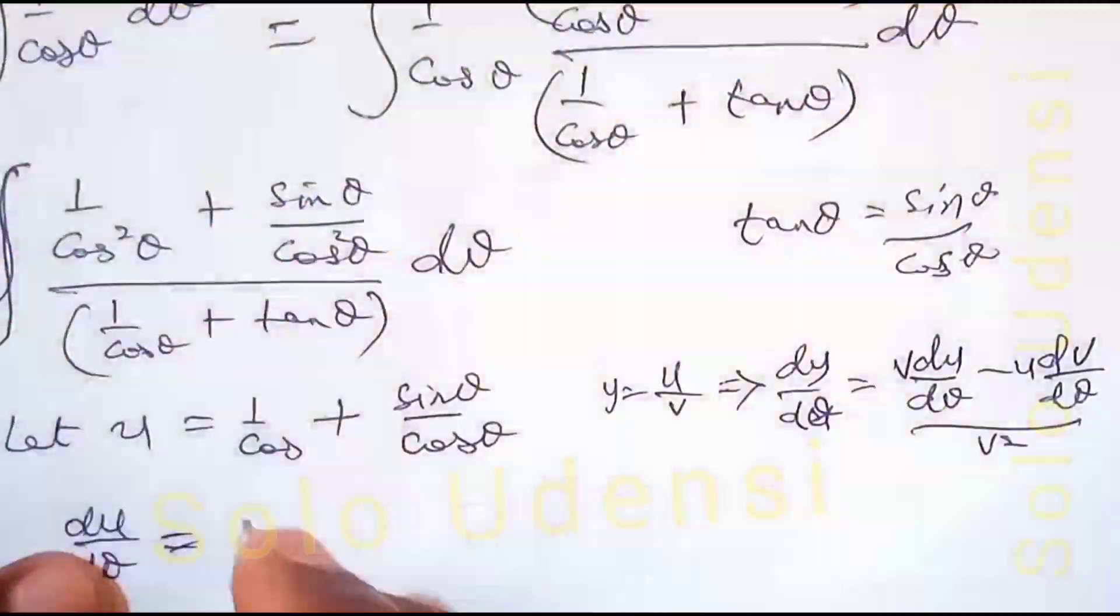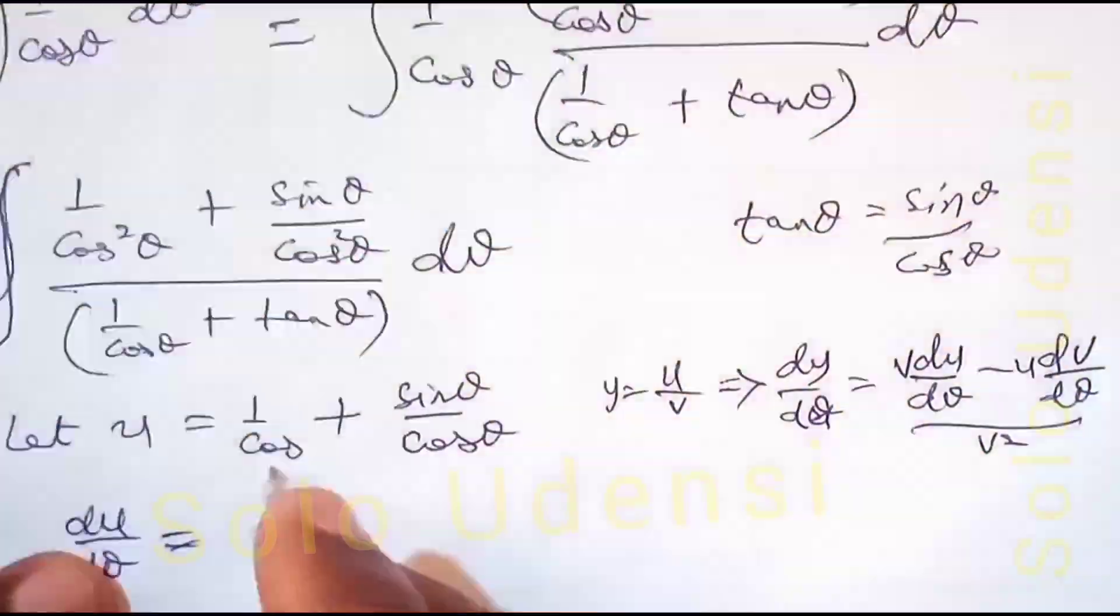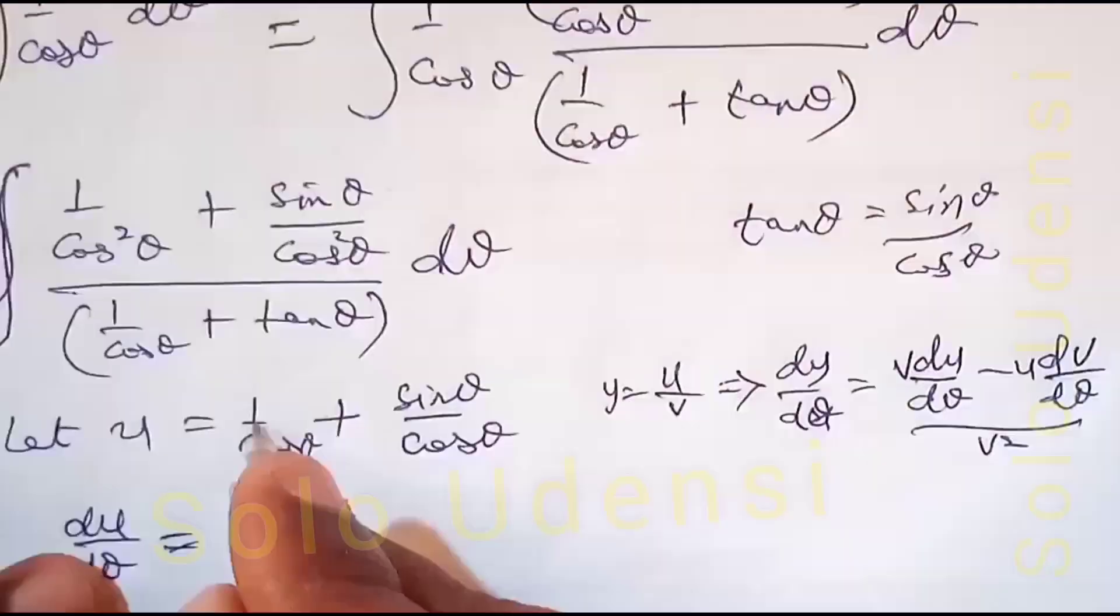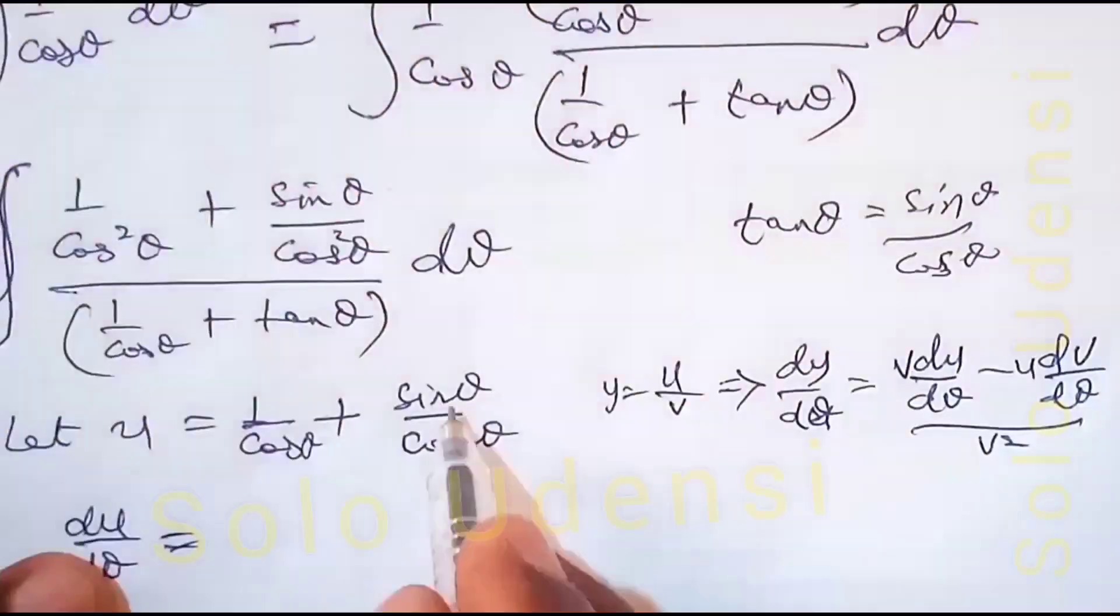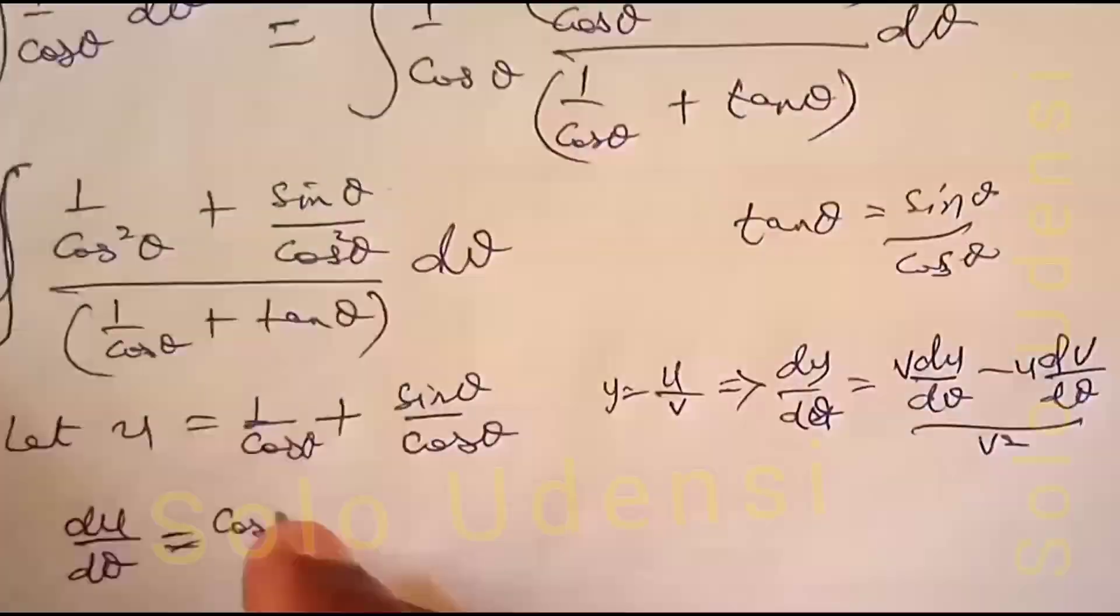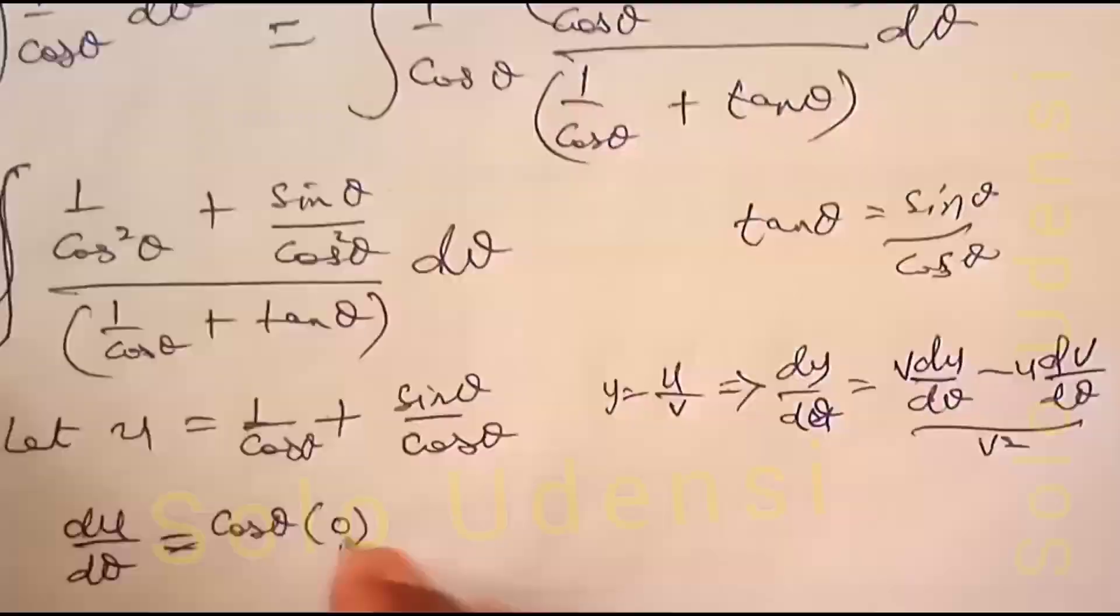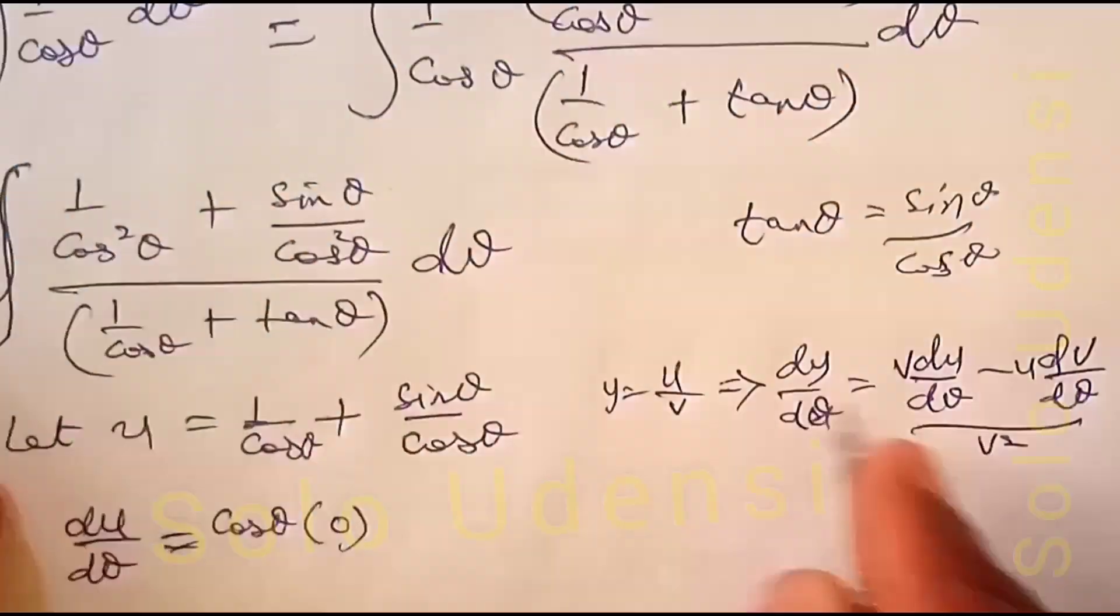If we apply it here, v is cos theta and u is sin theta. Cos theta times the derivative of 1 with respect to theta,